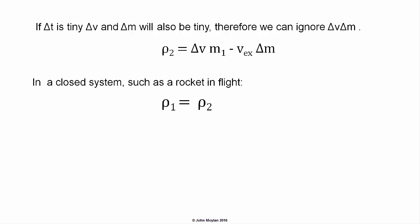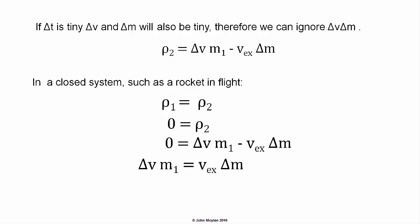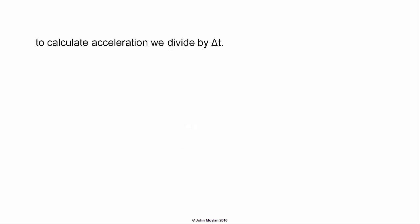As a rocket in flight is a closed system, momentum is conserved. Therefore, the momentum at time 1 is equal to the momentum at time 2, rho subscript 1 equals rho subscript 2. At time 1, the momentum is zero because the rocket is stationary. Therefore, the momentum at time 2 must also be equal to zero: zero equals rho subscript 2. Therefore, we can write zero equals delta V times M subscript 1, minus V subscript EX times delta M. This can be rearranged as delta V times M subscript 1 equals V subscript EX times delta M. Dividing both sides by M1, the initial mass of the rocket: delta V, the change in velocity of the rocket, is equal to V subscript EX times delta M over M subscript 1. All we have to do now to calculate the acceleration of the rocket is divide both sides by delta T.